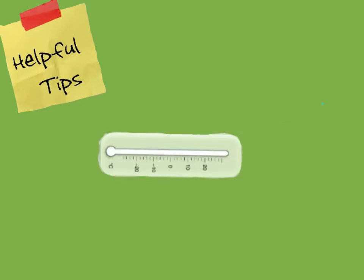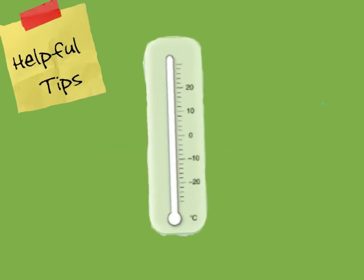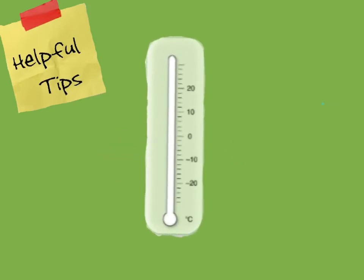Another real-life example many of you will use this winter is a thermometer — a real-life number line. We find zero, and anything above it is positive, anything below zero is negative.